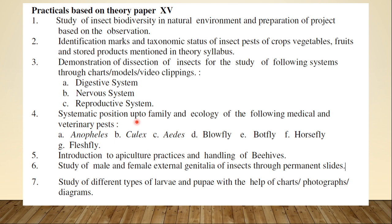The next topic is systematic position up to family and ecology of the following medical and veterinary pests: Anopheles, Culex, Aedes, Blowfly, Botfly, Horsefly, and Fleshfly. These are mosquitoes and flies, and they all belong to order Diptera. You have to learn about their family names and their ecology — meaning what economic damages or diseases are caused by these insects, what their hosts are, how they attack and find their hosts, and how you can control them.